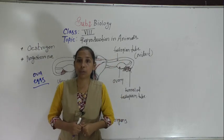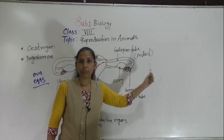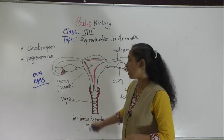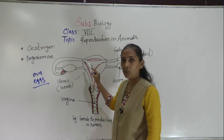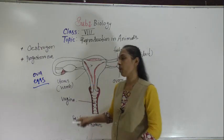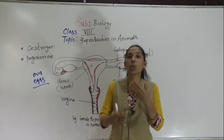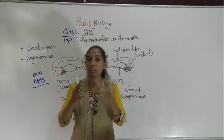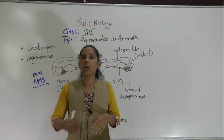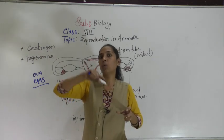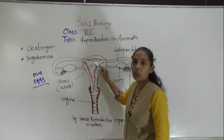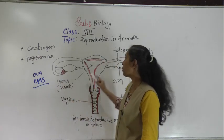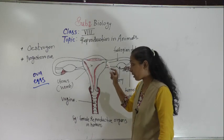The next reproductive organ is the uterus, also called the womb. The two fallopian tubes meet together and form one bag-like organ called the uterus. The growth and development of the fertilized egg — called the zygote — takes place in the uterus. All growth and development from zygote to the newborn baby happens inside the uterus.